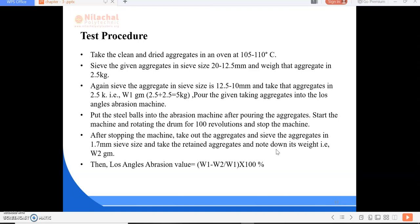That is W1 equals 2.5 plus 2.5 equals 5 kg. Put the given aggregate into the Los Angeles abrasion machine. Put the steel balls into the abrasion machine after pouring the aggregates. Start the machine and rotate the drum for 100 revolutions and stop the machine. After stopping, take out the aggregates and sieve the aggregates in 1.7 mm IS sieve size. Take the retained aggregates and note down its weight, that is W2 grams.